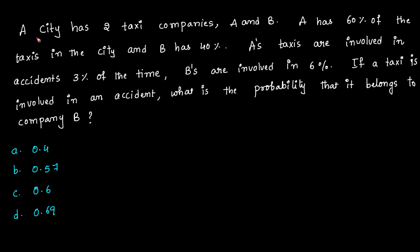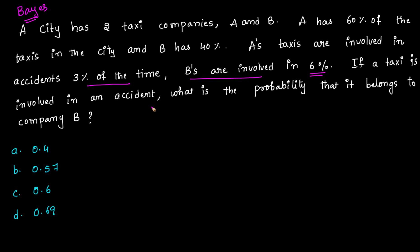In this video we'll understand an interesting problem from Bayes' theorem. A city has two taxi companies A and B. Company A has 60% of the taxis and company B has 40%. A's taxis are involved in an accident 3% of the time and B's taxis are involved 6% of the time. If a taxi is involved in an accident, what is the probability that it belongs to company B?